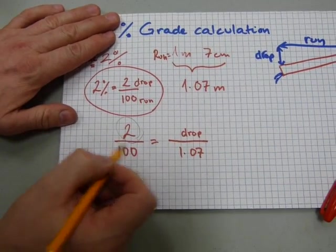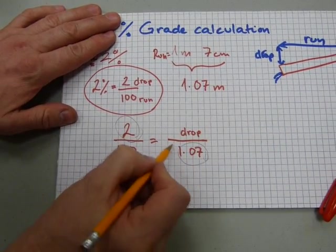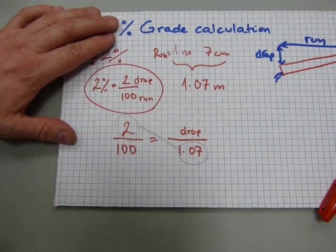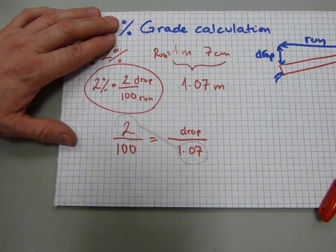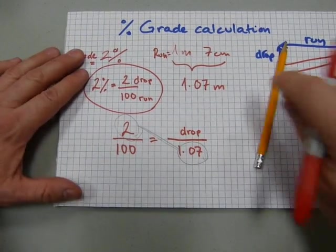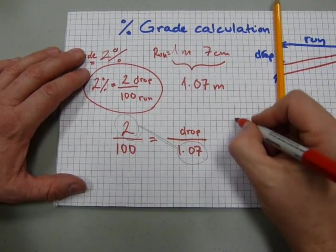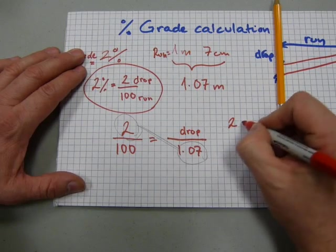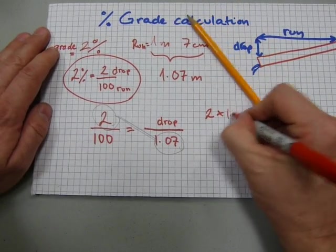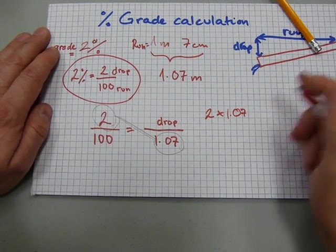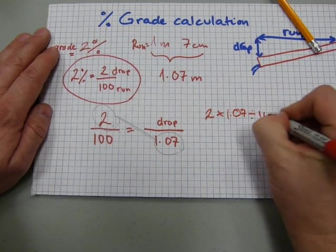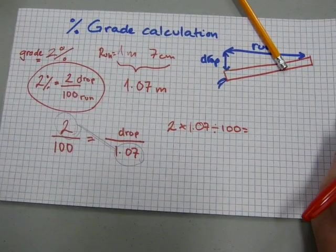You need to grab this number, multiply it with this number, that one with that one, and divide by 100. That's going to equal your actual drop. What you're going to enter into the calculator is 2 times 1.07 divided by 100, and we're going to get the decimal number out of it.